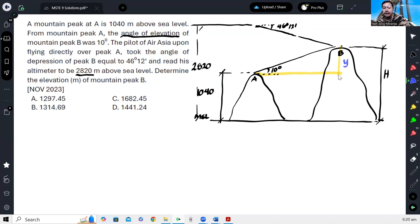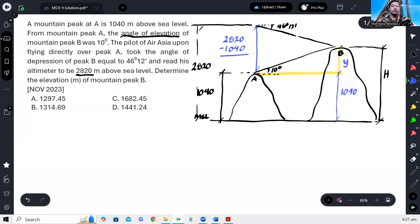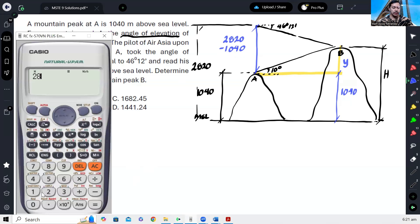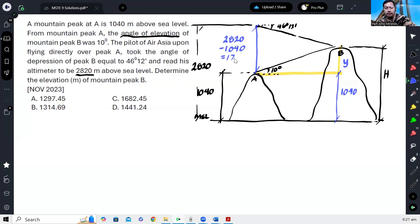Once we have that, we'll just add it to 1,040, and that will be the elevation of B. So the question now is, how do we compute it? To compute that, there are multiple ways. One is we can measure this elevation, which is basically the difference of 2,820 and 1,040. So that's 2,820 minus 1,040, which gives us 1,780.